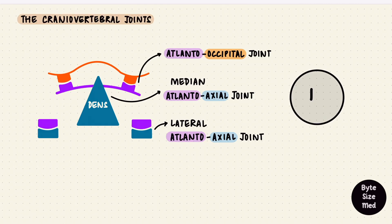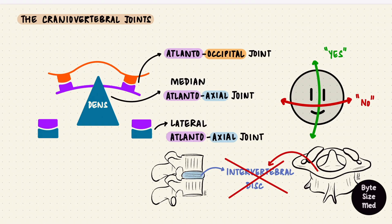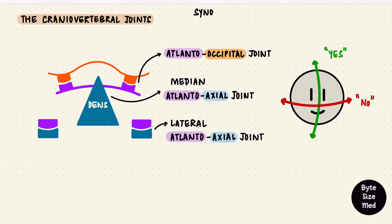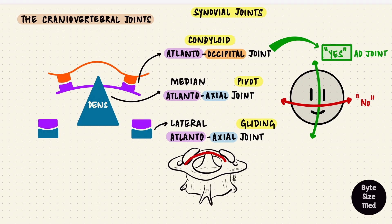These joints are needed for movement of the head with the neck — nodding up and down in a yes, and shaking your head side to side in a no. Between atlas and axis there is no intervertebral disc. These joints are synovial joints because they are movable. The atlanto-occipital joint is a condyloid joint, with its main movement being flexion and extension — that's nodding yes — plus a little side tilt of the head. The atlanto-axial joints are different: the lateral ones are gliding joints, but the median one with the dens is a pivot joint. That's because atlas, carrying the cranium, rotates on axis — that's how the head moves side to side in a no.